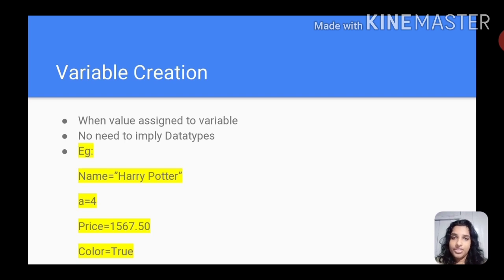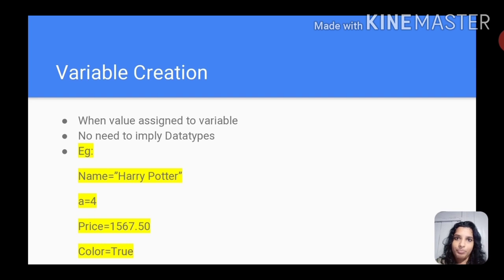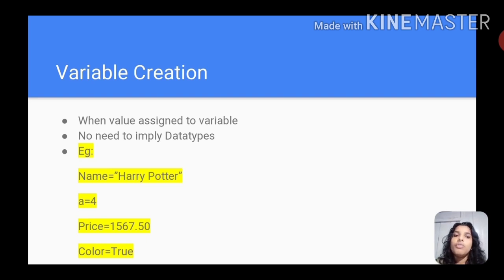Then you can see the variable creation. How do you know the variable? This variable is called value. That is why we use the assignment operator to assign value. Now let's declare the value here. We can use Python. We can use Harry Potter as a string. A is equal to 4 — number 4 stored in a variable.